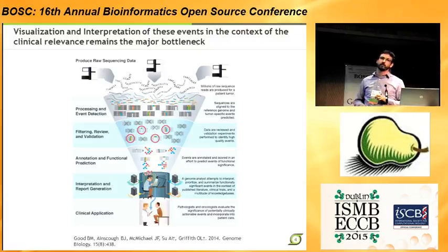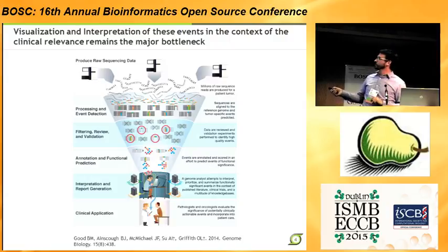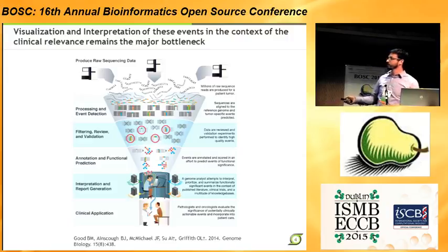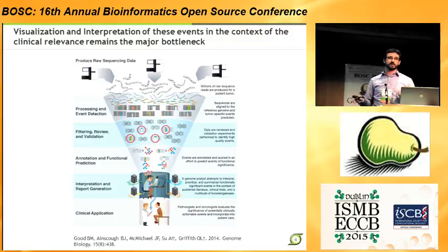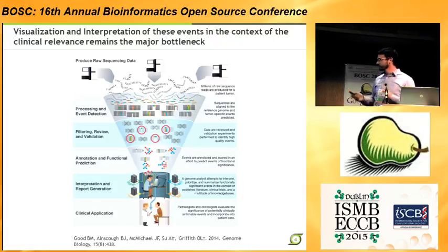Something that remains a real bottleneck for us at WashU is the visualization and interpretation of these events, especially in the context of clinical relevance. We've gotten pretty good at taking raw data off the sequencing instruments, processing it, identifying molecular events or mutations, doing filtering and review and automated validation, some manual validation as well, and annotating mutations with respect to their potential functional relevance. But then we get stuck at the interpretation and report generation step, where it can take many hours to synthesize all of this complex genomic information into an executive summary you'd feel comfortable handing to an oncologist who has maybe five or ten minutes of their time.